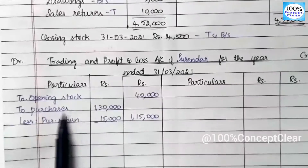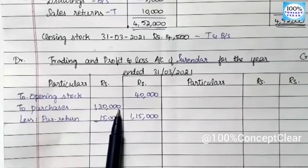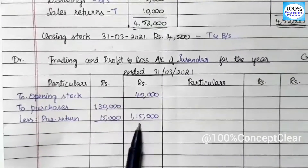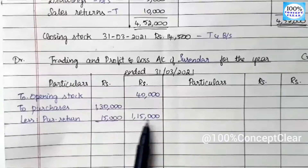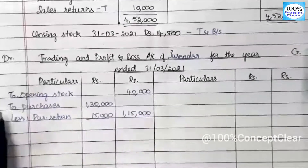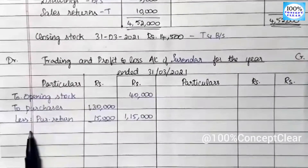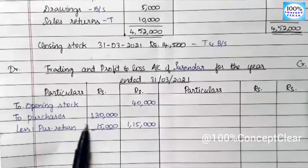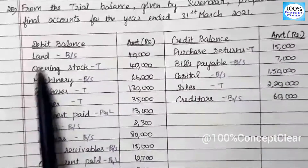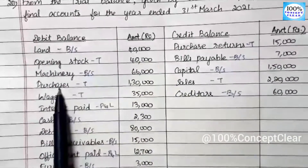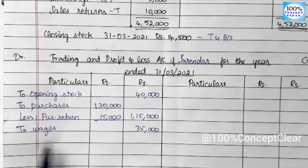We have purchases of $1,30,000. We will return $15,000 as purchase return, so we minus the purchase return value. Net purchases come to $1,15,000. We will note this in the trading account. Next there are wages, and the wages amount is $35,000, so we note that on the debit side.